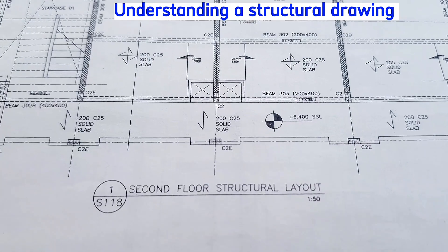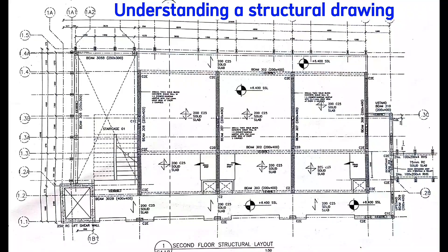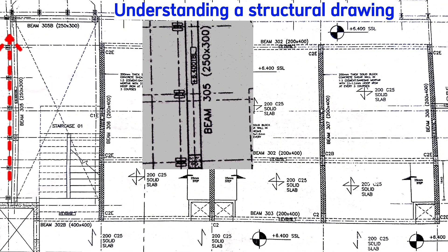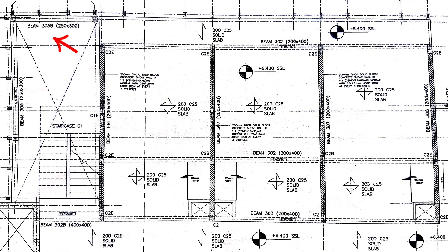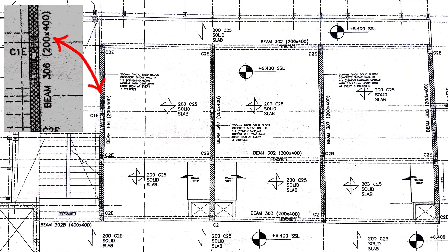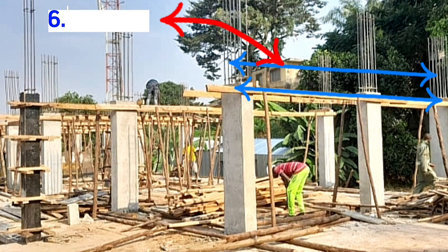Let's take an example of the second floor structure layout, which shows us the position of the beams. Along here, this is beam 305 of 250 by 300 millimeters thickness at 6.4 meters top beam level. This is beam 306 of size 200 by 400, also at 6.4 meters top beam level.